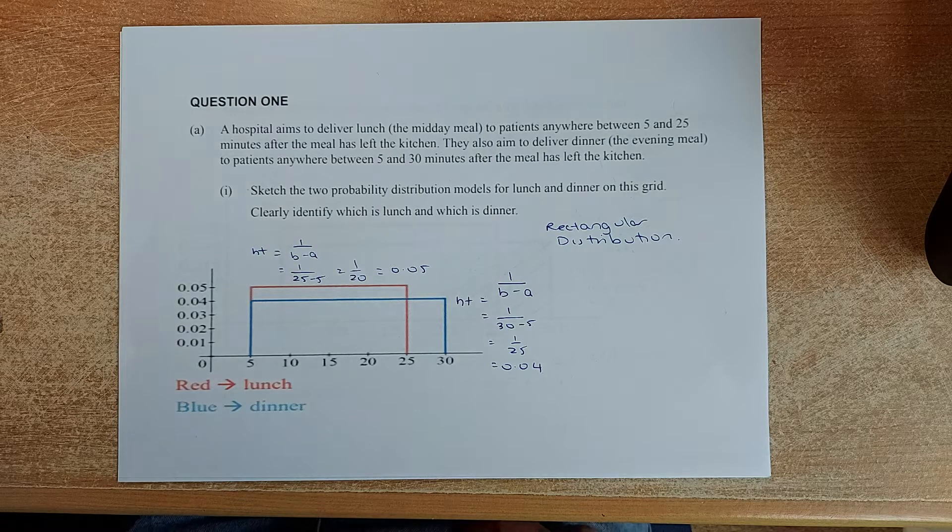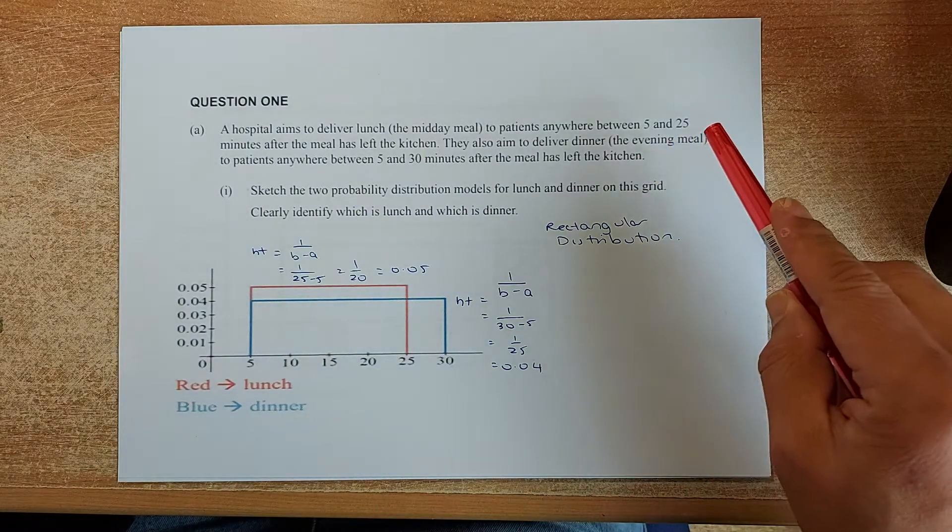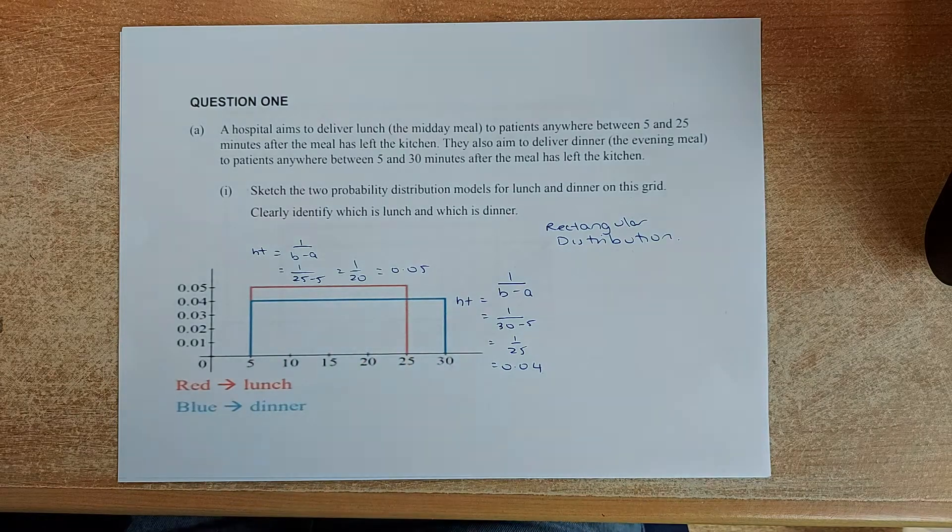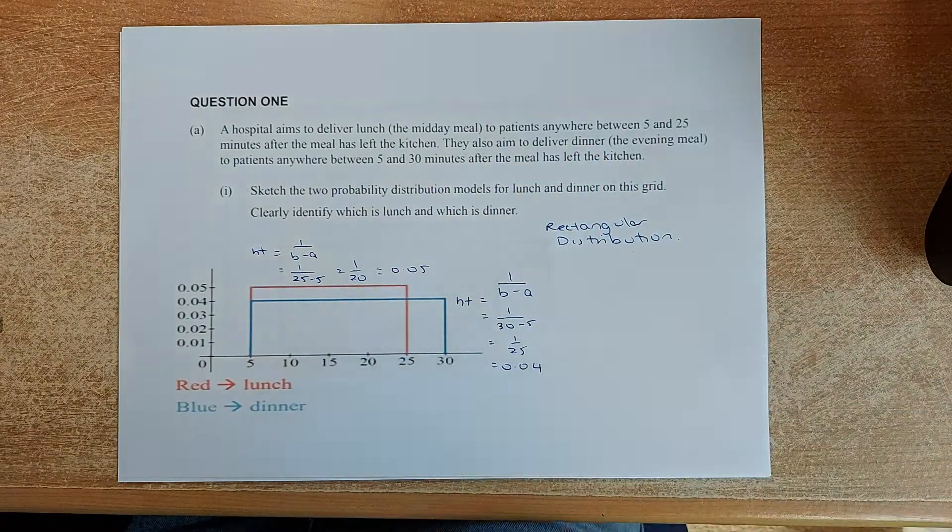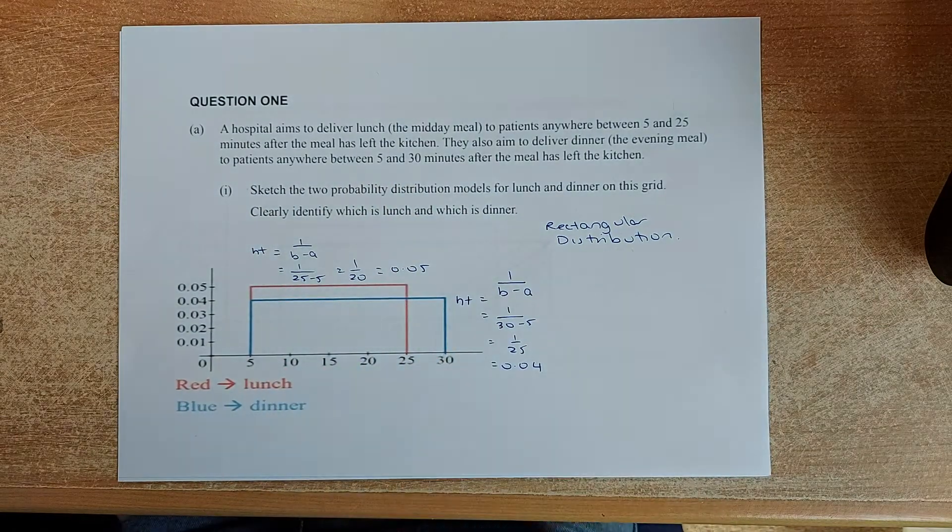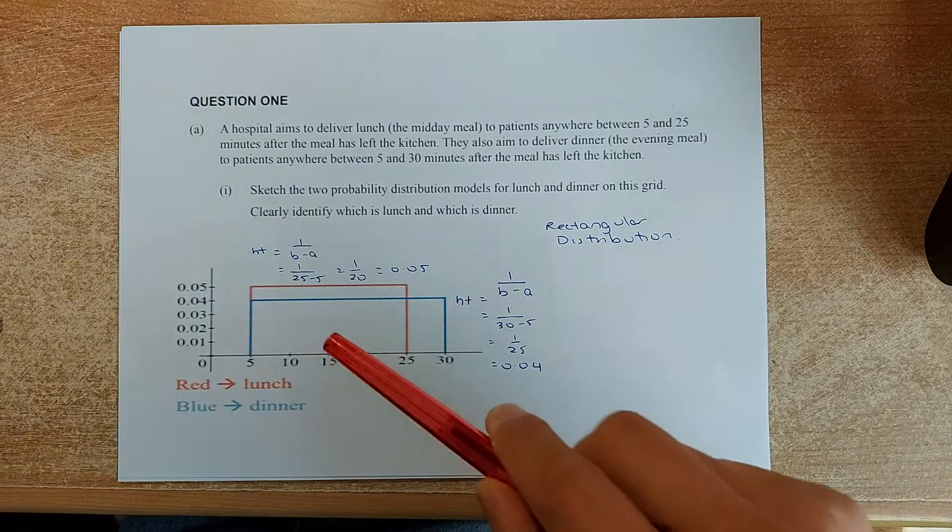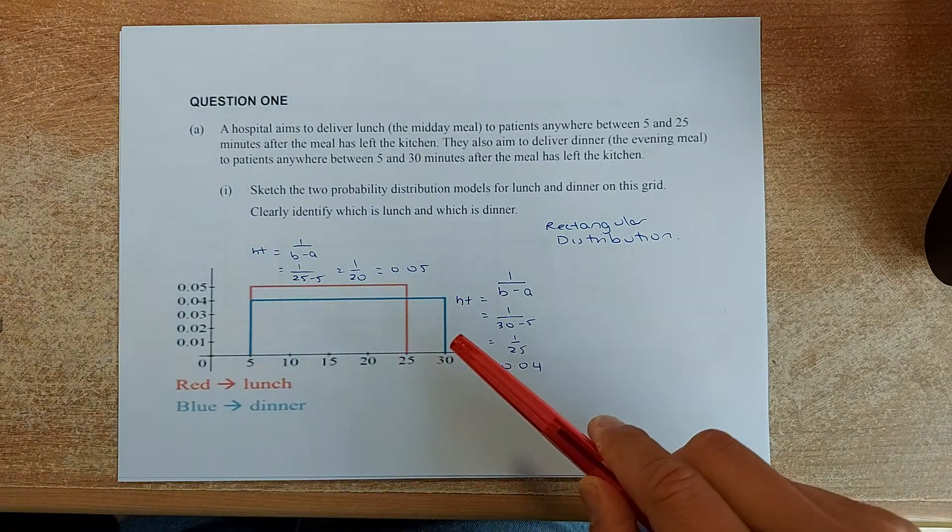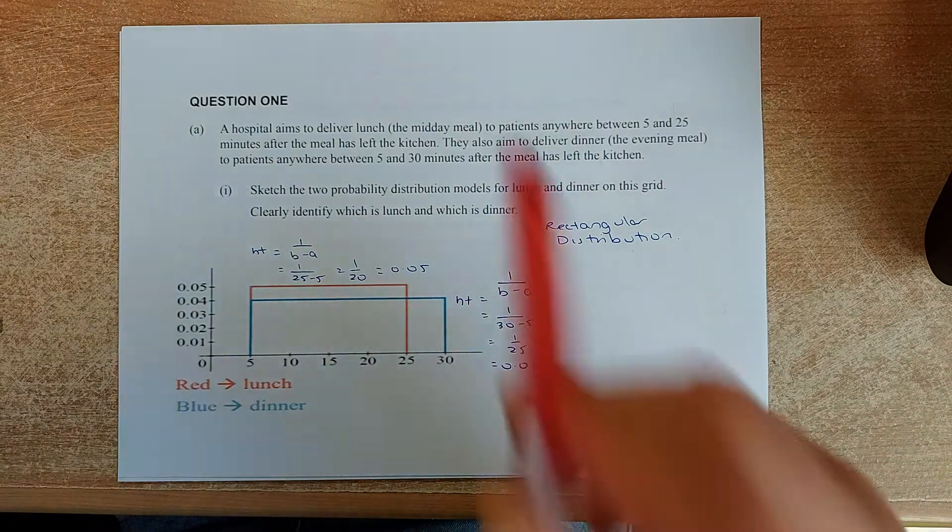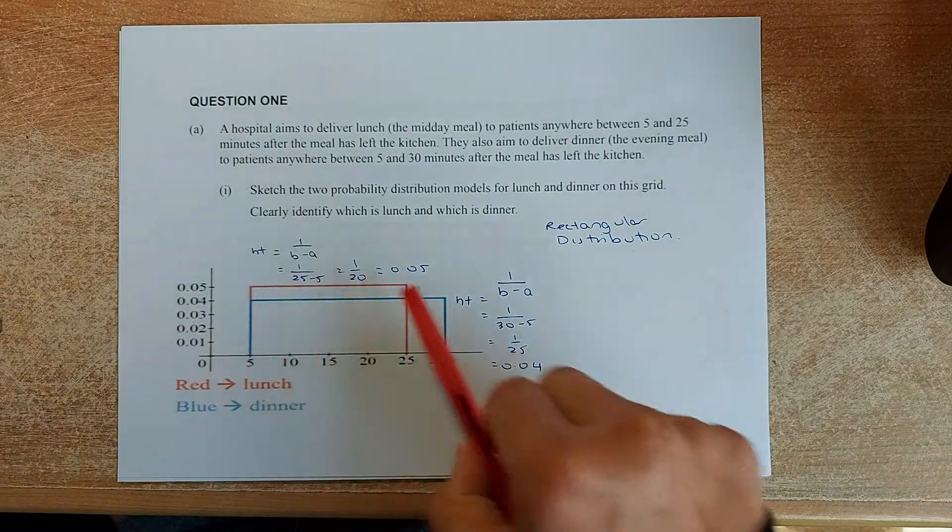A hospital aims to deliver lunch to patients anywhere between 5 to 25 minutes. So lunch will be in between 5 to 25 minutes. We have drawn this graph. And they also aim to deliver dinner to patients between 5 to 30 minutes, the blue graph. So sketch the graph. This has to be either a triangular or a rectangular distribution. This has to be rectangular because the triangular distribution has a picked point. In this point we don't have that. So we have drawn this graph.